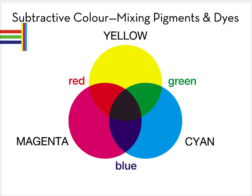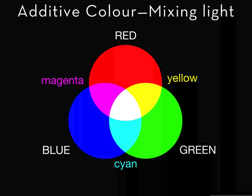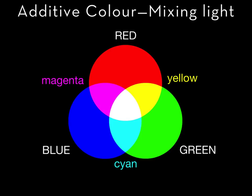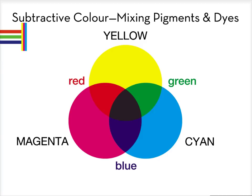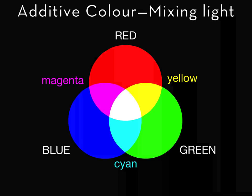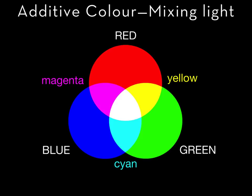Notice that the secondary colors derived from mixing any two of the primary subtractive colors are the same as the additive primary colors. Red, blue and green are additive primary colors; red, blue and green are also secondary subtractive colors. Yellow, magenta and cyan are primary subtractive colors, and magenta, yellow and cyan are secondary additive colors.